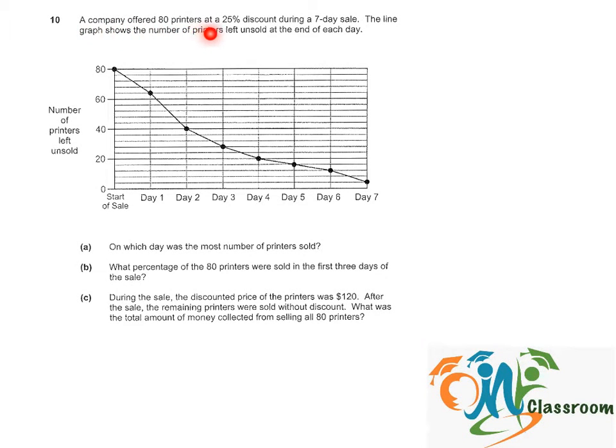A company offered 80 printers at a 25% discount over a 7-day sale. The line graph shows the number of printers left unsold at the end of each day. So the keyword here is left unsold. Now let's try to interpret the line graph.